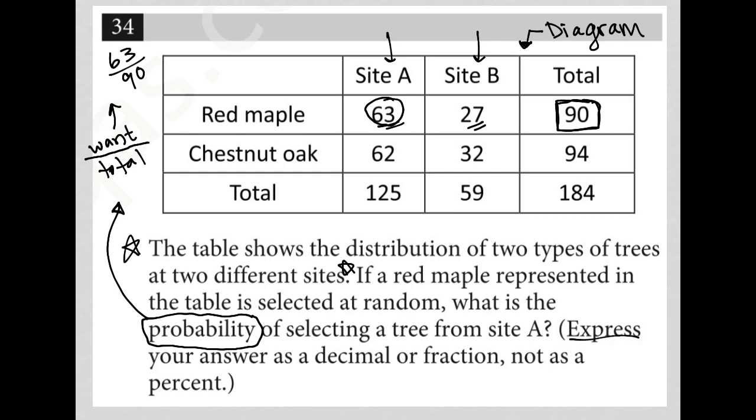Now the note says express your answer as a decimal or a fraction, not as a percent. So we have 63 divided by 90. We can definitely reduce that fraction, but this is the calculator section, so I'm going to just throw it into my calculator instead of having to figure out how to reduce it. What I get is 0.7, and therefore 0.7 is the correct answer.